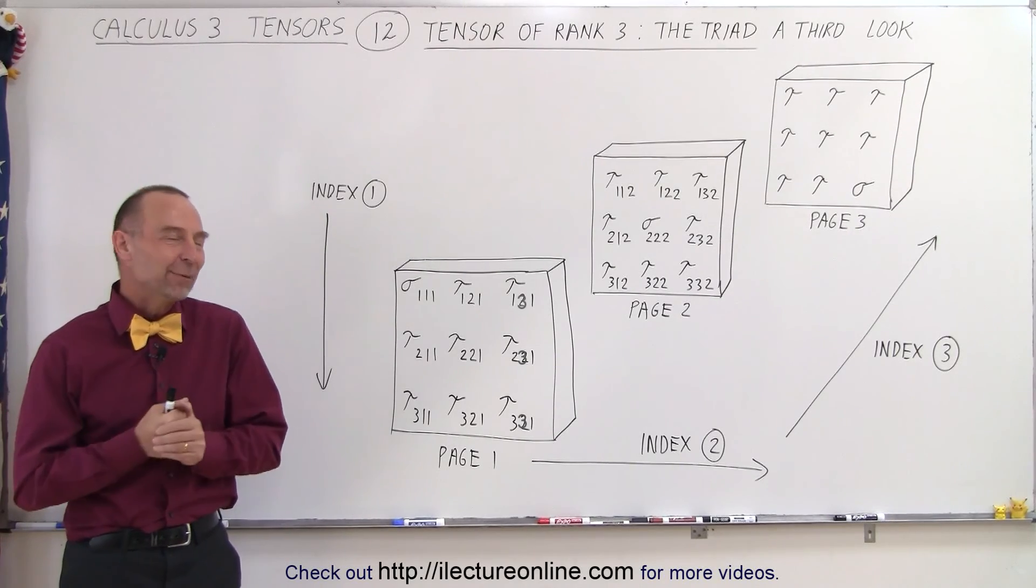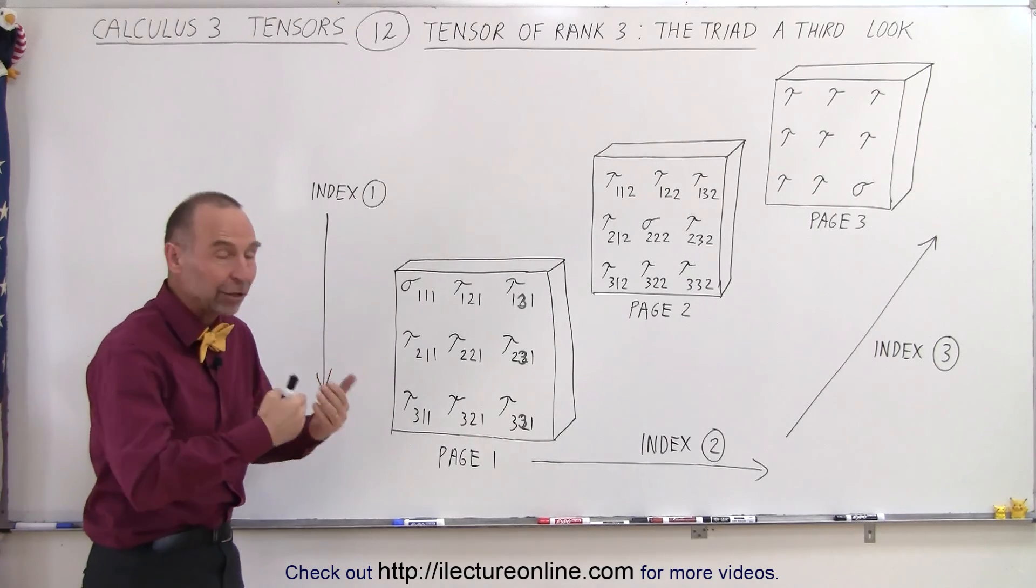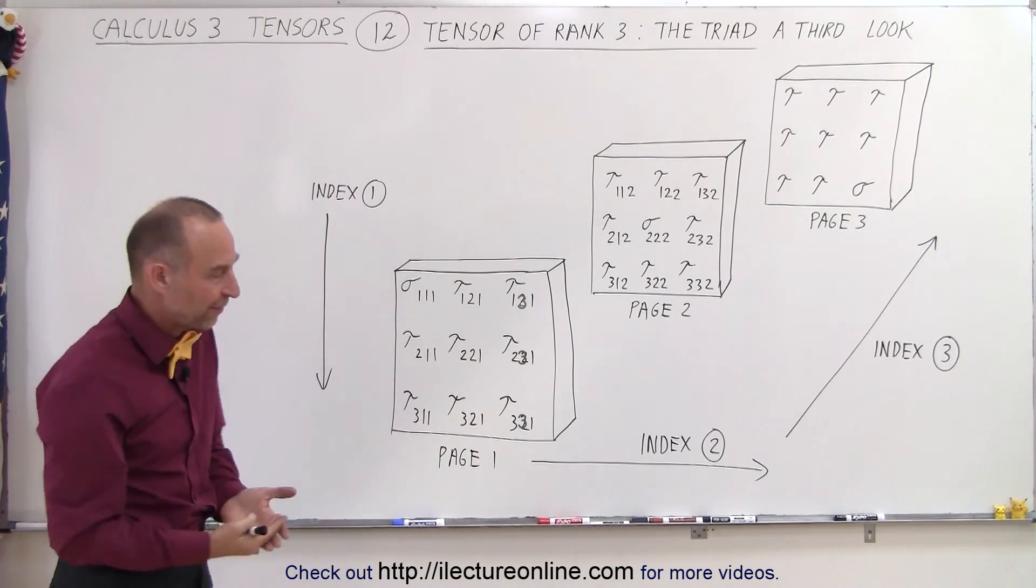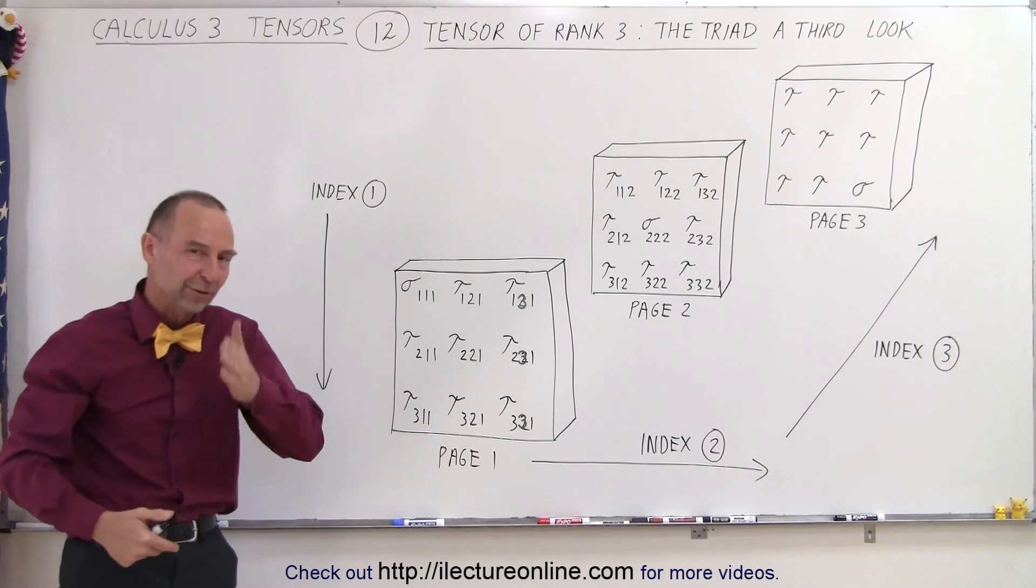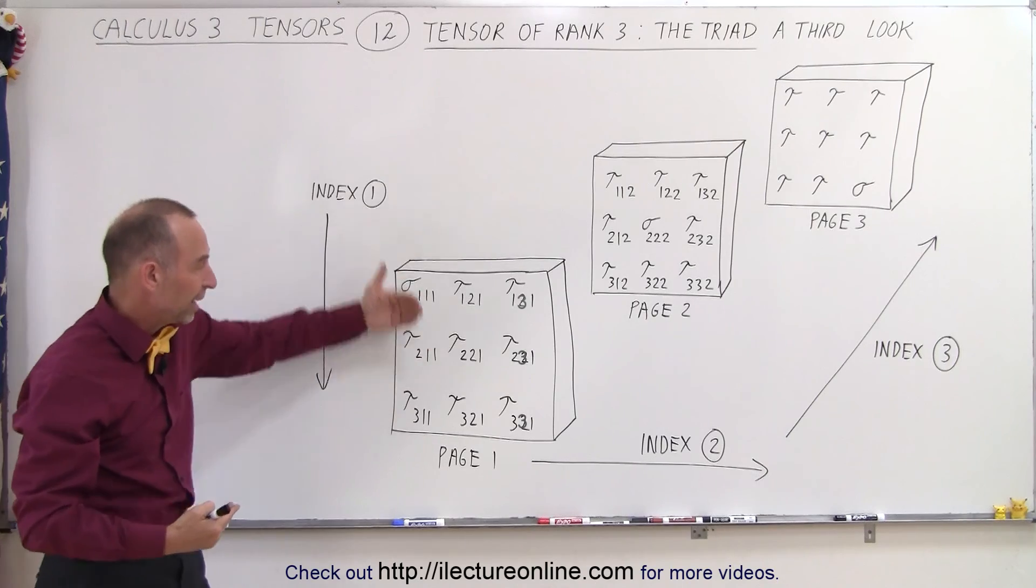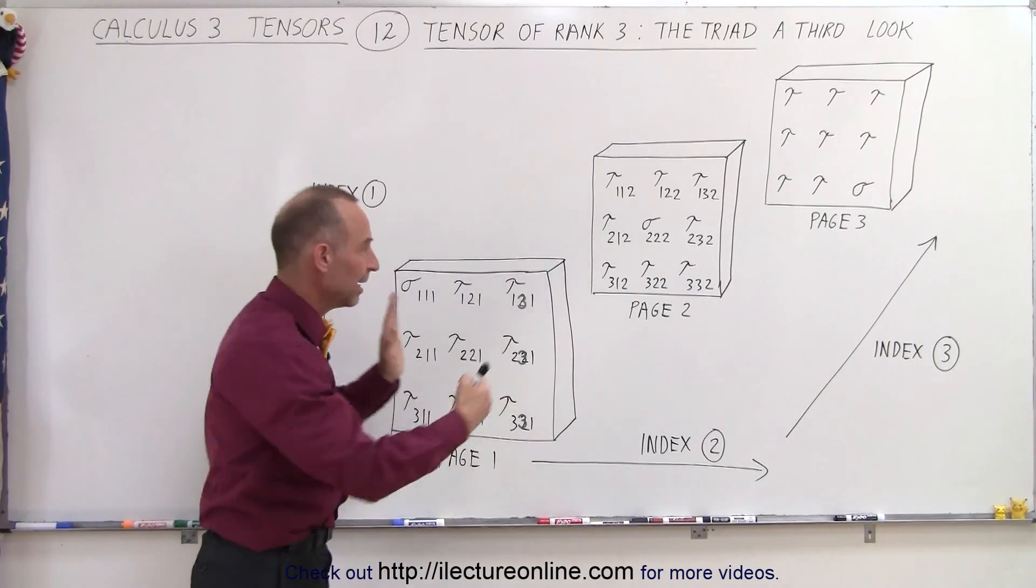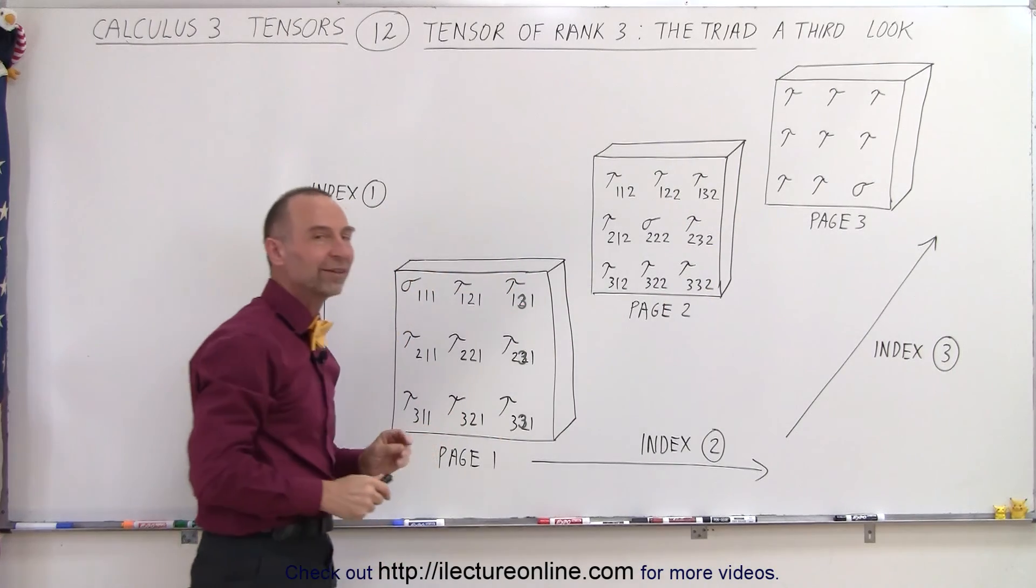Welcome to ElectronLine and here we have a third look at a triad. In this case we're going to take the cube representing the 27 components and slice it from front to back. Since the slices from front to back represent the pages, we are slicing the pages - page one, page two, page three. If you glue them together front to back like this, you have a cube with 27 components.